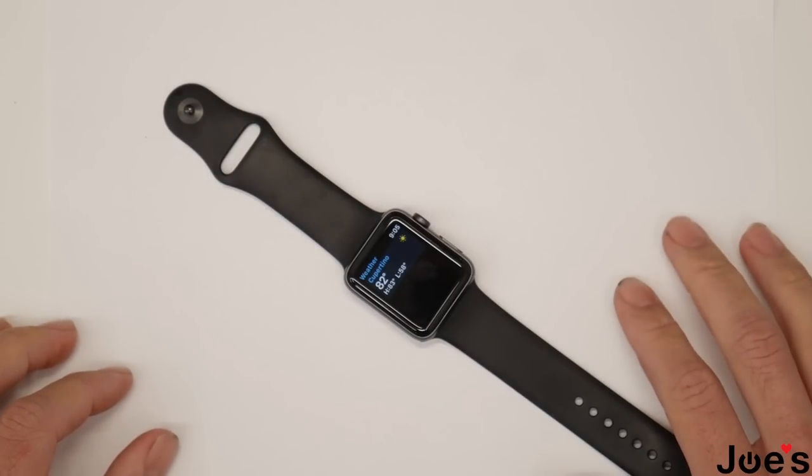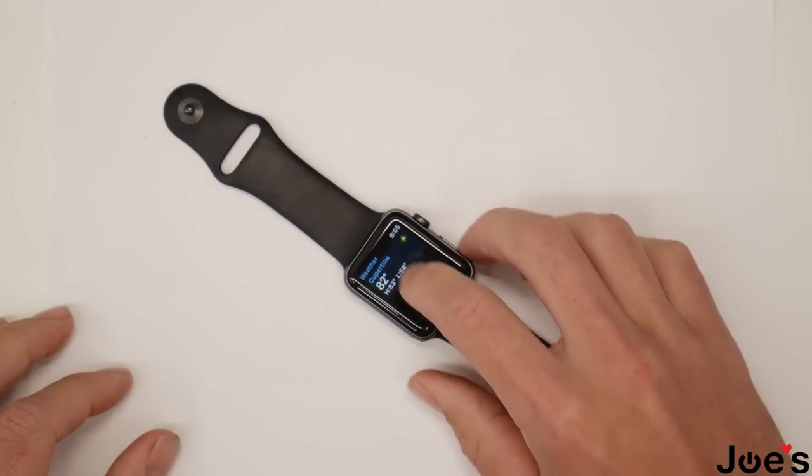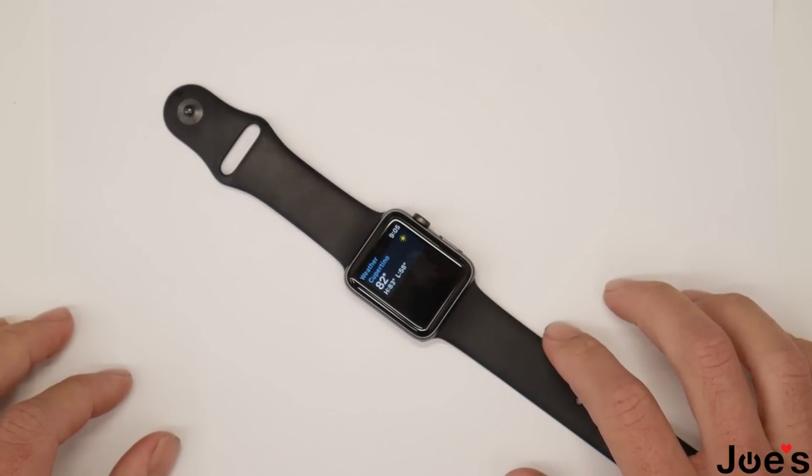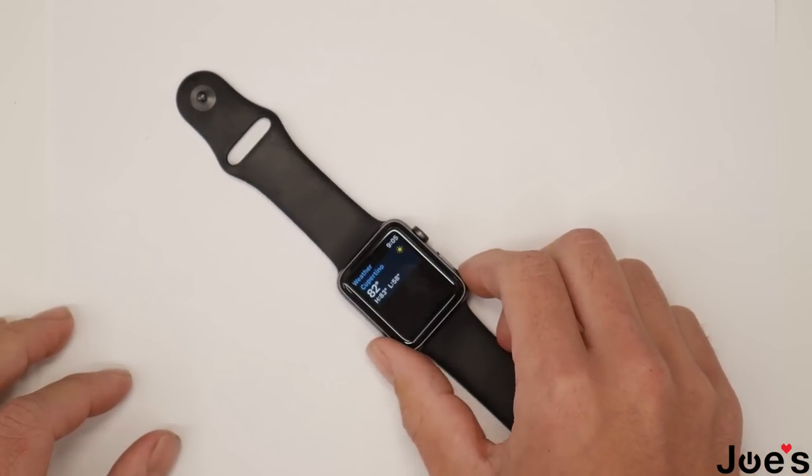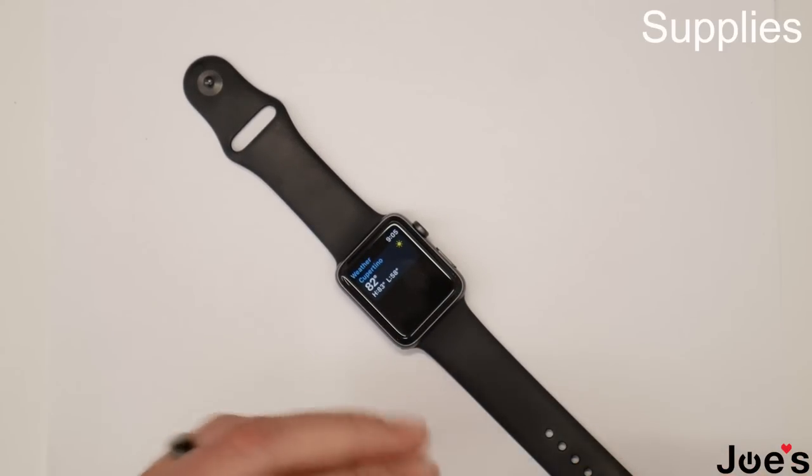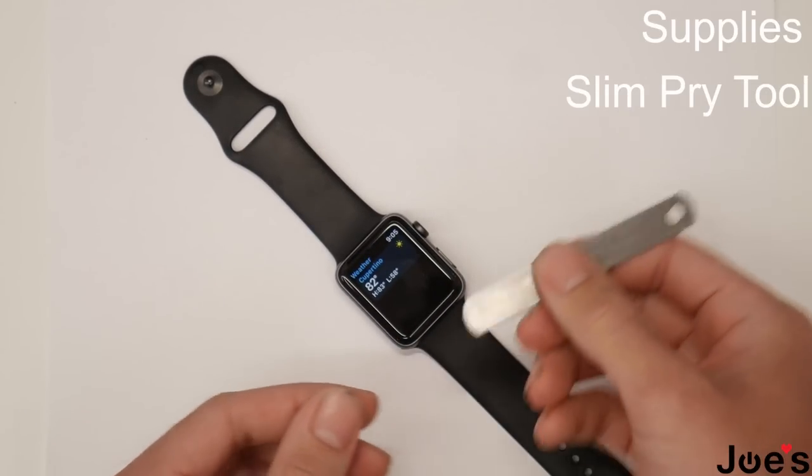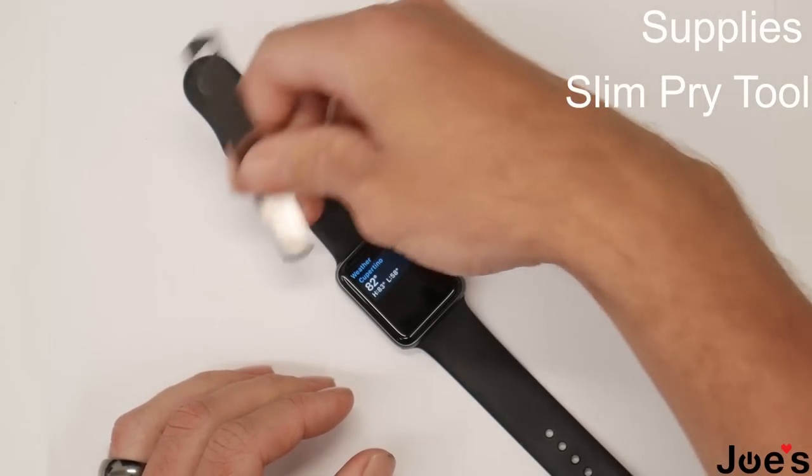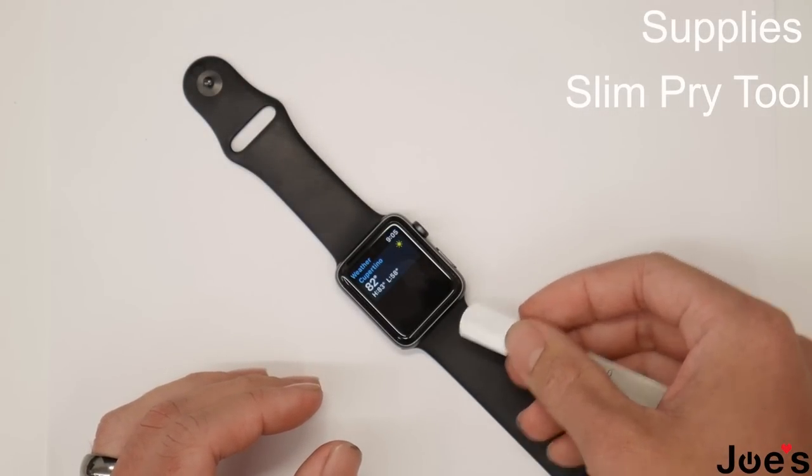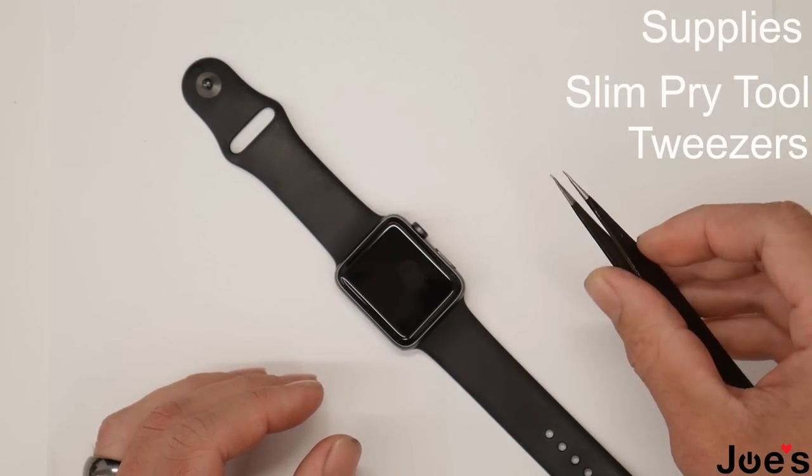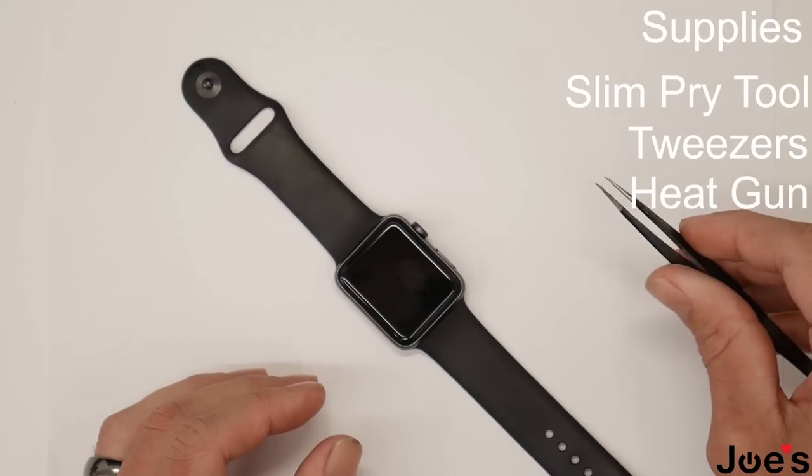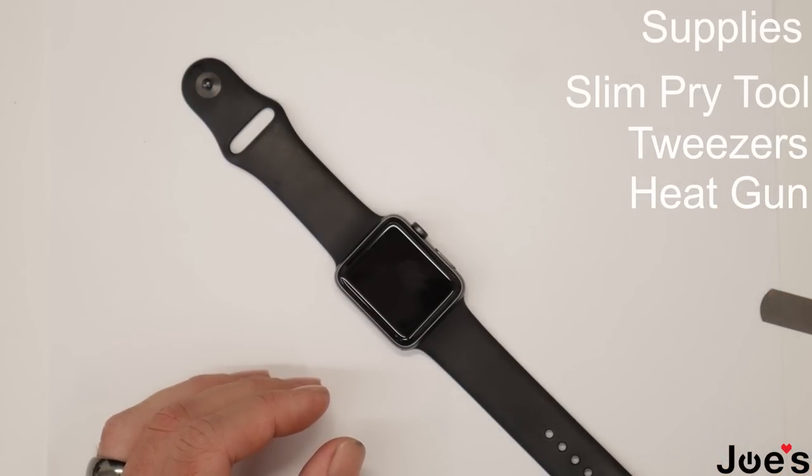Today I'm going to show you how to replace your display, your screen, on your Series 3 Apple Watch. First, you want to begin with collecting some tools. I have a slim pry tool, it's just a feeler gauge to get underneath the screen and break the adhesive on the screen to pry it open. And I have a pair of tweezers. These tweezers will be used to remove some tape on the back of the screen.